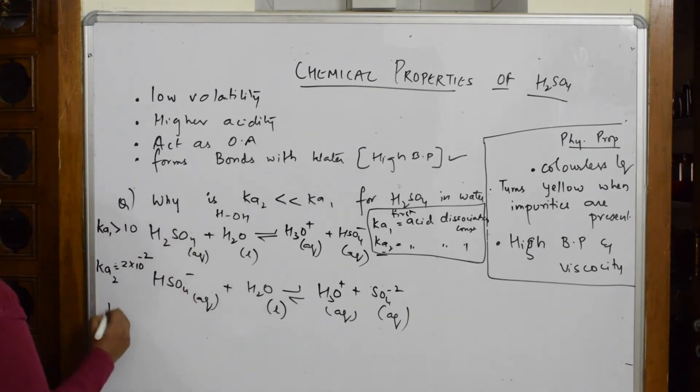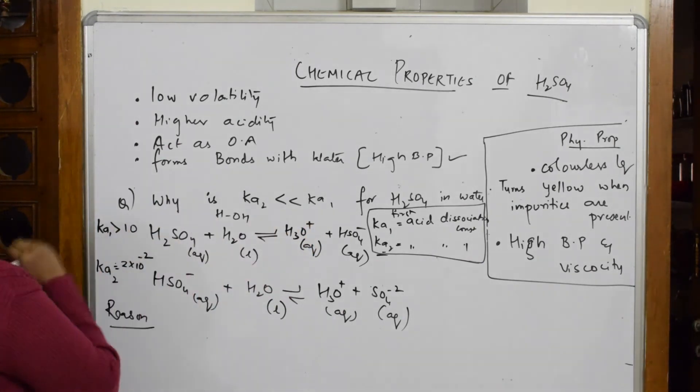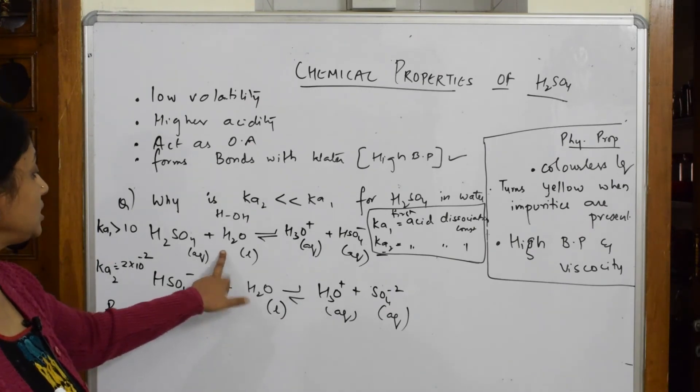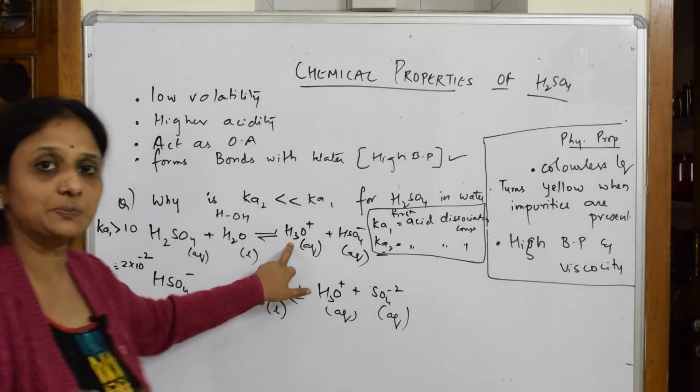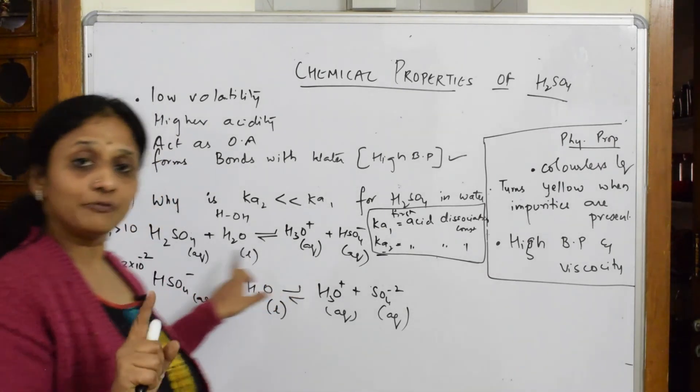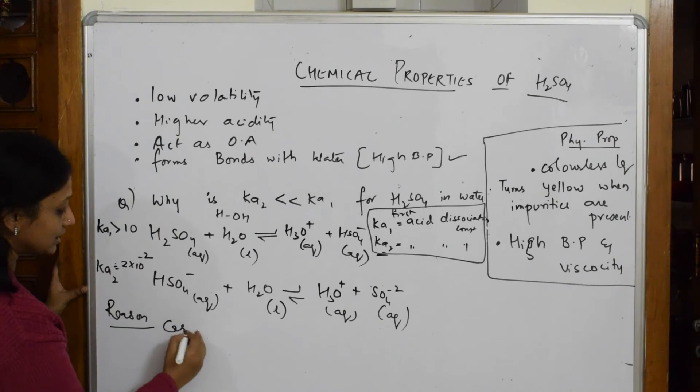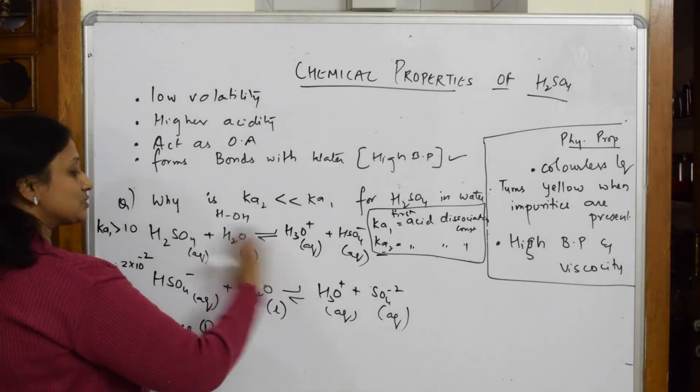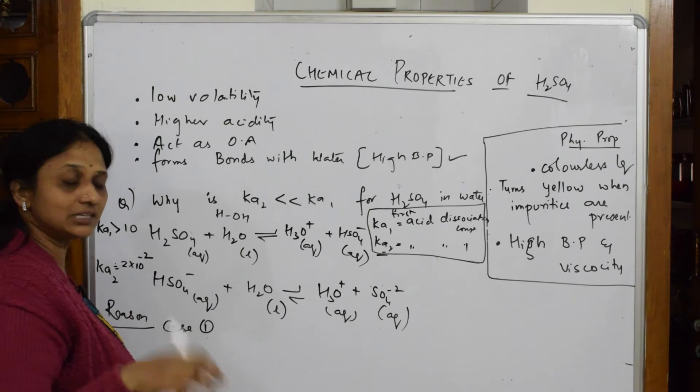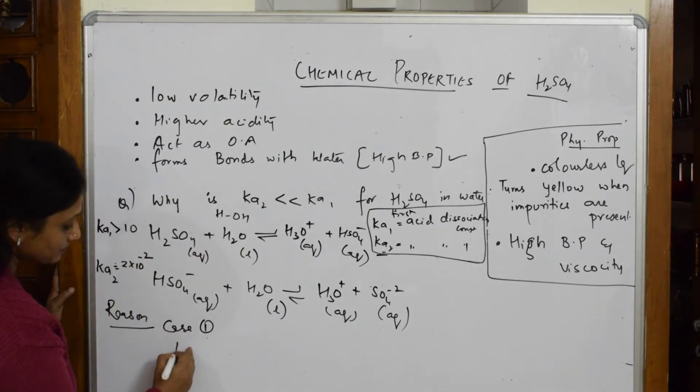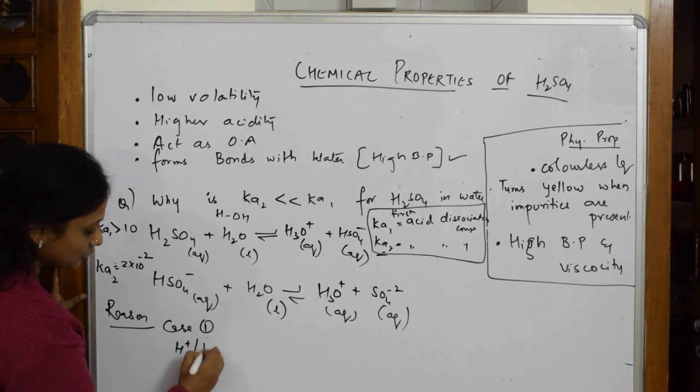When I dissociated this, I got this value. When I dissociated that, I got that value. When do I get this value? When you're trying to remove H+ from a molecule. In case one, the release of H+ was easy—I can easily remove it from a neutral molecule. In case one, H+ or H3O+ was removed from a neutral sulfuric acid molecule.